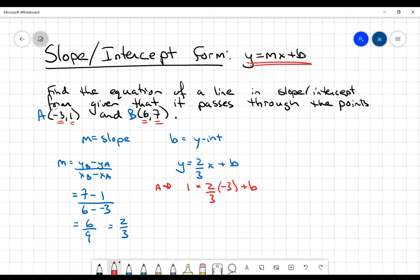So remember, this is the x coordinate and this is the y coordinate. Sometimes that's not clear that the x coordinate and this x right here are the same thing. So now I can do a little arithmetic to get b. 2 thirds times negative 3, the 3s cancel, I'll end up with negative 2. Then I'll add 2 to both sides and I'll get that b equals 3.